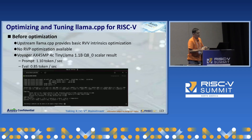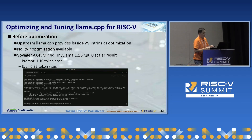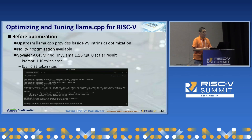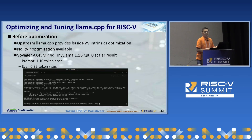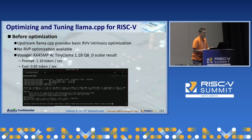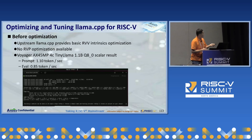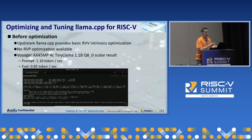This slide shows the inference speed before optimization. The target model is TinyLlama 1 billion parameters, and we asked the model how to build a website in 10 steps. The output speed is only around 1 token per second using scalar instructions.